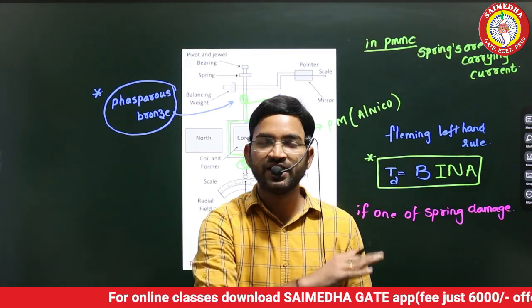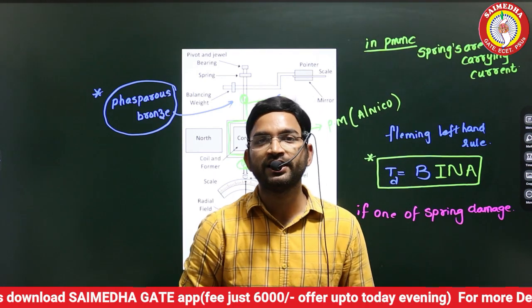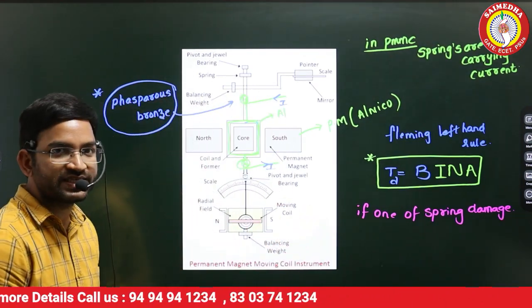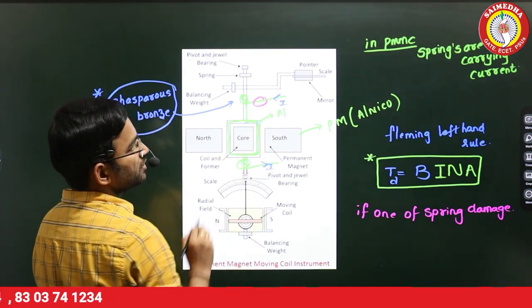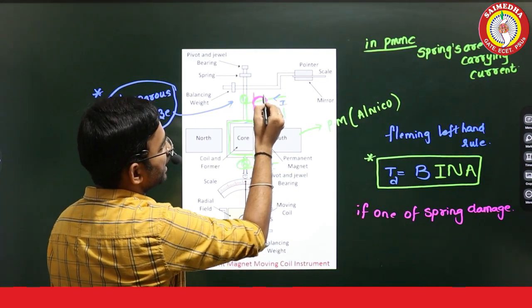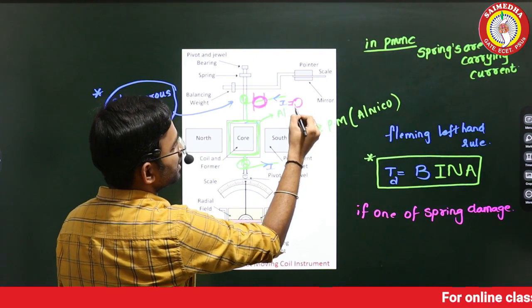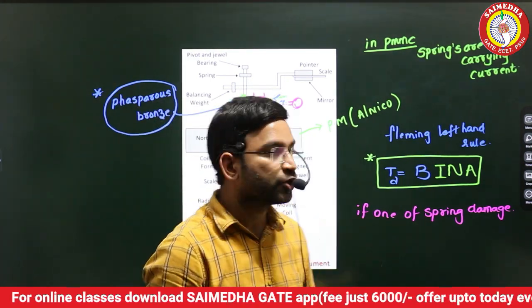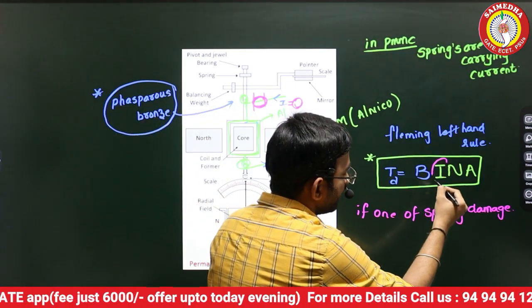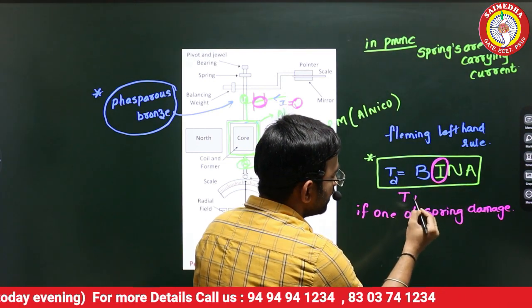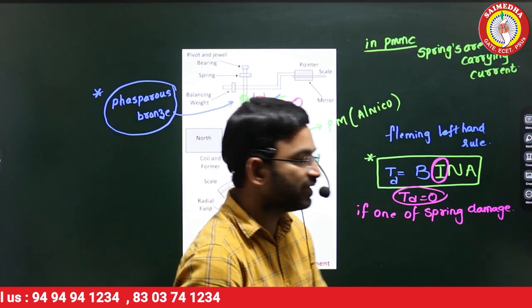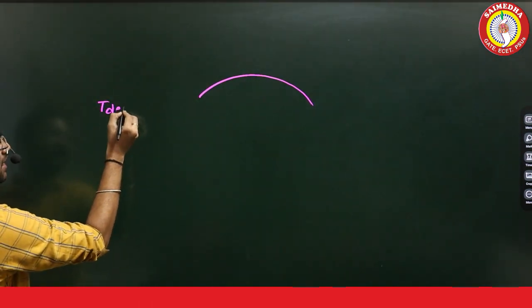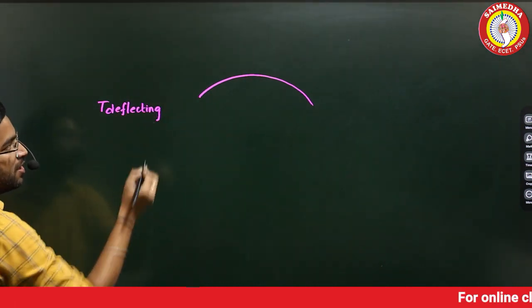We have PMMC, moving iron, EMMC — do the springs carry the currents? In PMMC, if one spring is damaged and breaks, it creates an open circuit. Open circuit means current is zero. If current is zero, deflecting torque is zero. If deflecting torque is zero, the pointer reads zero.